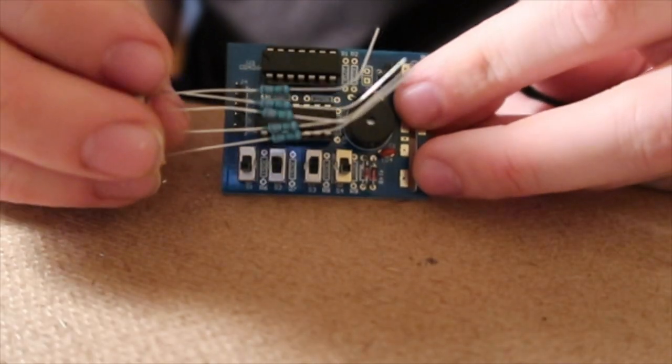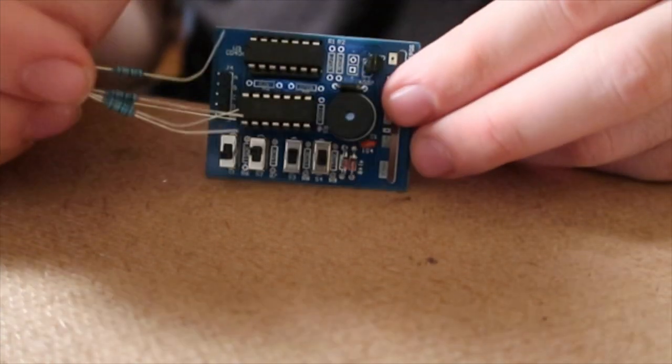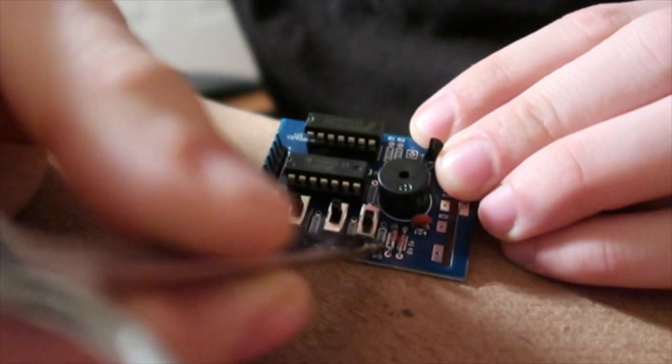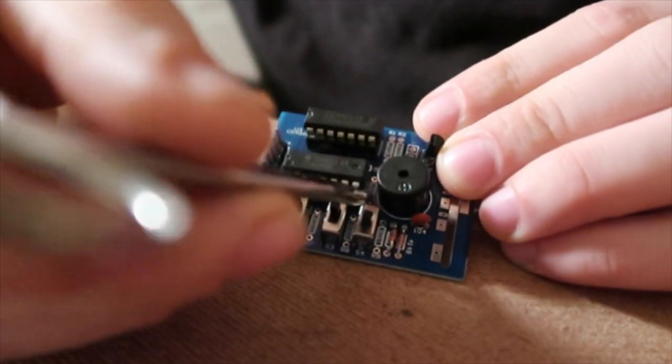These five resistors are going to be the 150 kilo-ohm resistors. They go between each of these and between the speaker and the chip here.